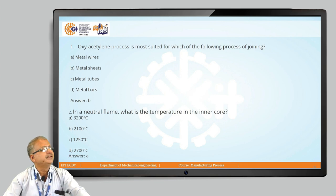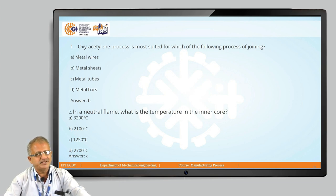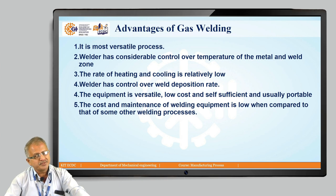Quiz time: the first question — oxy-acetylene process is most suited for which of the following joining applications? Options are: metal wires, metal sheets, metal tubes, and metal bars. The answer is metal sheets, which is useful for thin sections where you can control the heat and process it very effectively. The second question — in a neutral flame, what is the temperature at the inner cone? Options include 2100, 1250, and 2700 degree centigrade. The answer is the point where the temperature is 3200 degree centigrade, producing the required combustion temperature for melting the base metal.